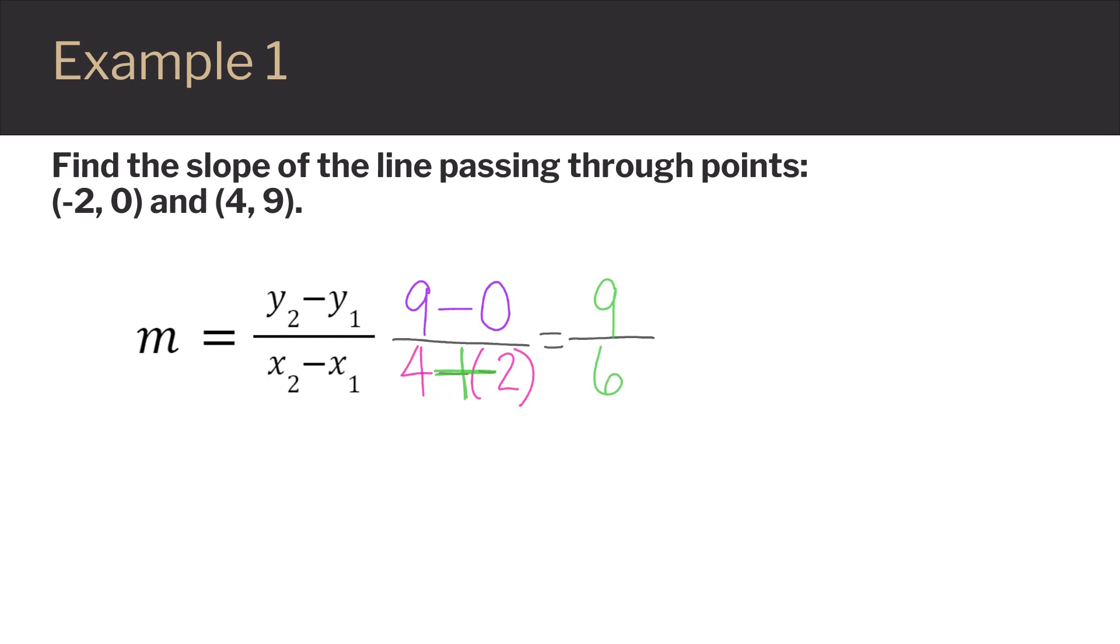Because we can simplify 9 over 6 by dividing both numbers by 3, we can go ahead and do that. 9 divided by 3 gives us 3, and 6 divided by 3 gives us 2. So our slope is 3 over 2.